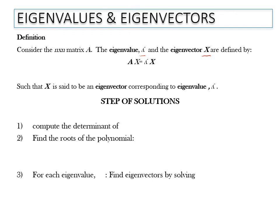The first step is we need to compute the determinant of A minus lambda I. Here, I is the identity matrix. So if it's a 3 by 3 matrix, it should be the 3 by 3 identity matrix.